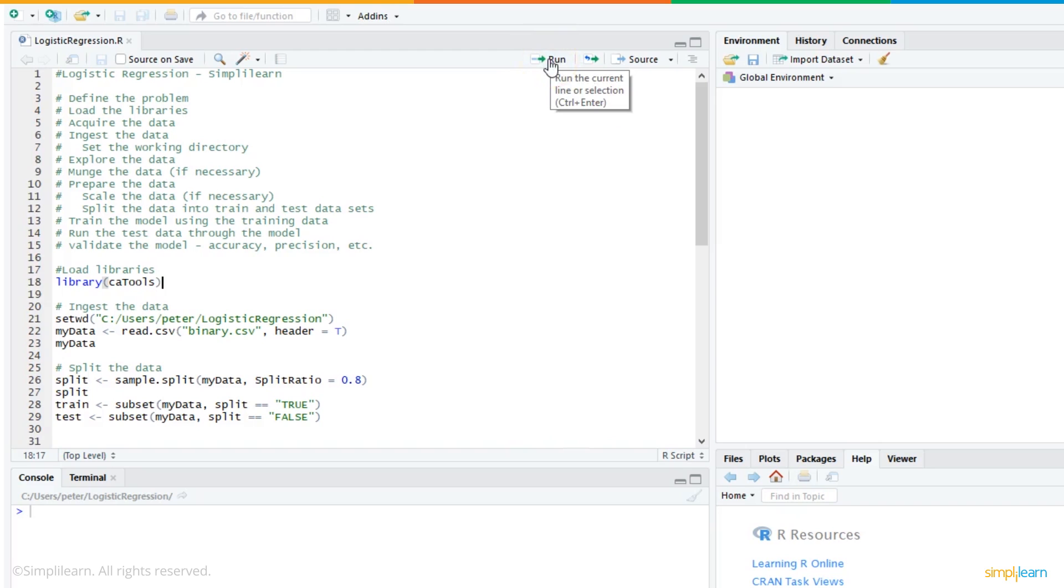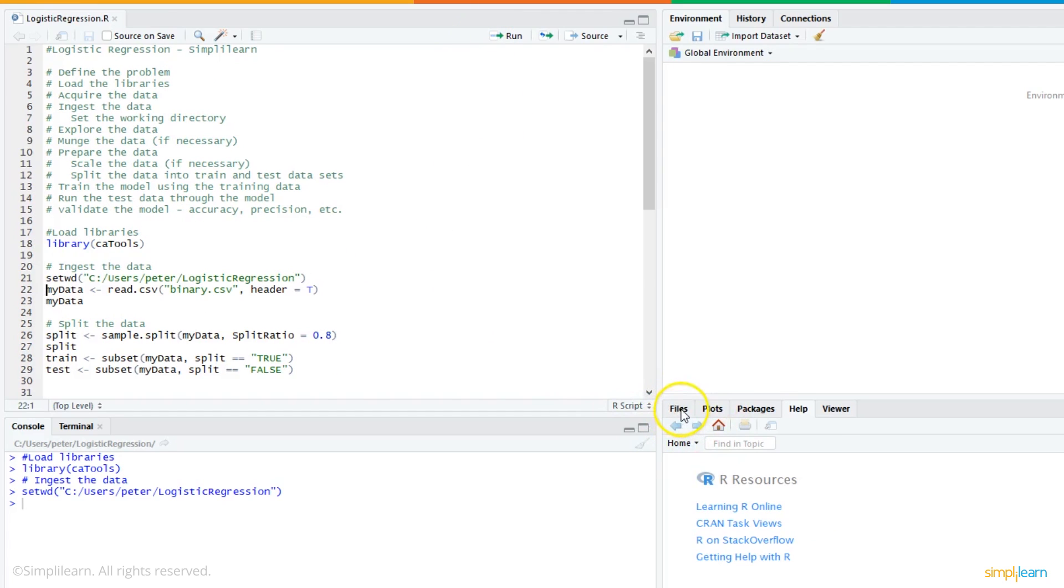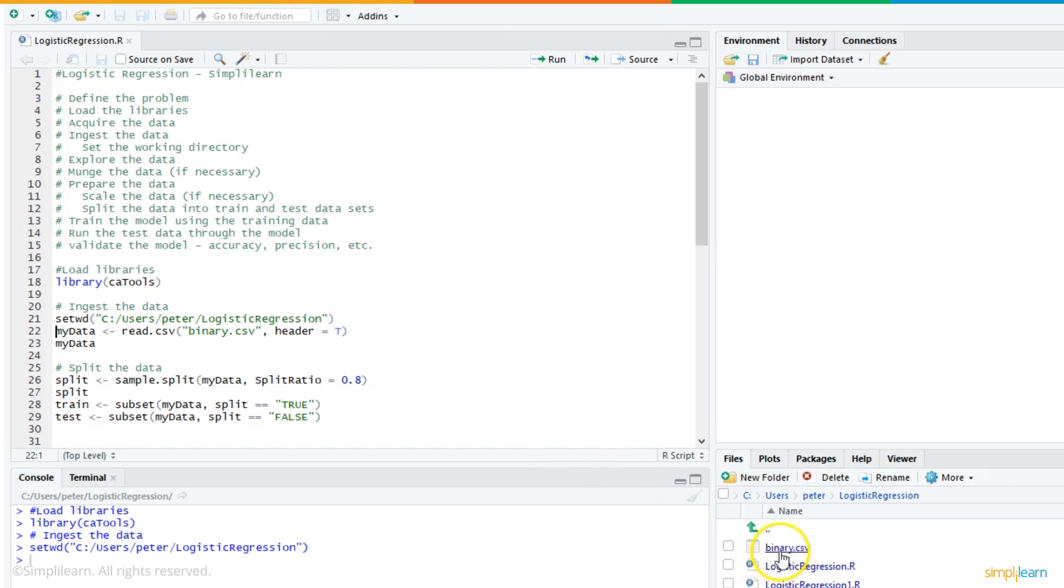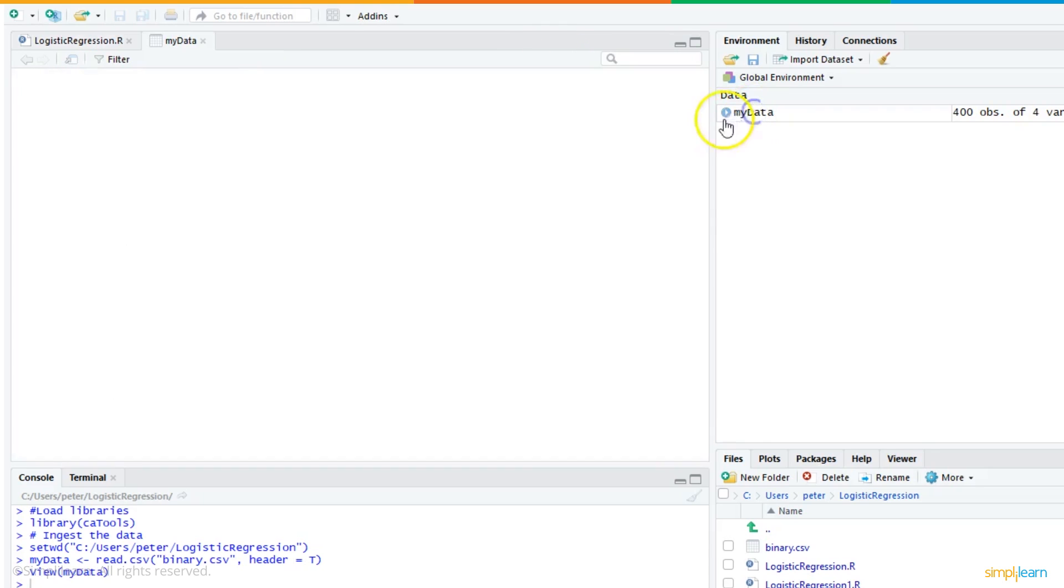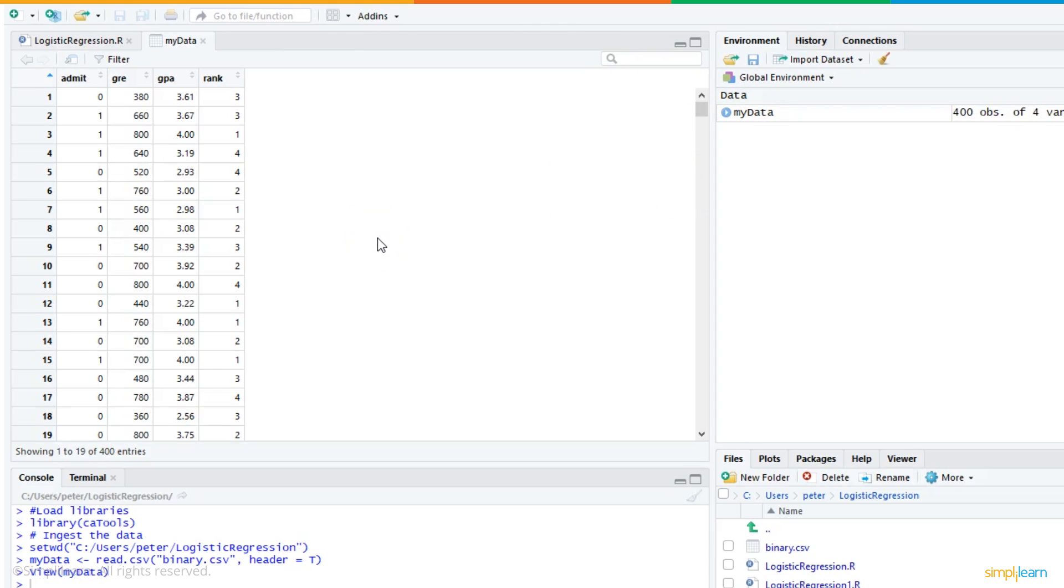So here we are going to load our libraries. I'm going to use a package called ca-tools. And now that the library is loaded, I'm going to set my working directory. And if I come over here to the files tab, you'll see that there is my working directory. In that working directory, there's a file called binary.csv. And that's the CSV, the comma-separated value file that the college gave me. I'm going to ingest and then look at that data. And as you can see, it has four columns, gre, gpa, rank. And then the answer column, admit, whether or not someone was admitted, which would be a one, or not admitted, which would be a zero. And if we come over to the right, we can look and see some of the first few values of each of those four columns.